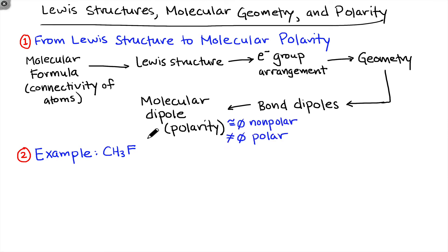What I'd like to do now is work through an example of this chain of reasoning using the molecule CH3F, or methyl fluoride. To start off, we begin with the molecular formula, and this is a given piece of information: CH3F for this compound. The connectivity of this molecule is built into that molecular formula. Carbon is at the center, and the hydrogens and fluorine are on the outside.